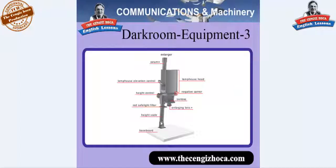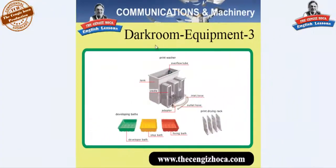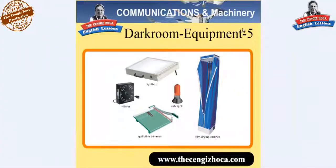Height scale, red safe light filter, height control. Darkroom equipment four: print washer, overflow tube, tank cradle, inlet hose, outlet hose, adapter, developing baths — developer bath, stop bath, fixing bath — and a print drying rack. Darkroom equipment five: light box, timer, guillotine trimmer, safe light, and film drawing cabinet.